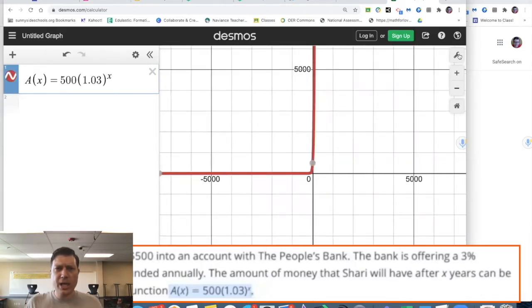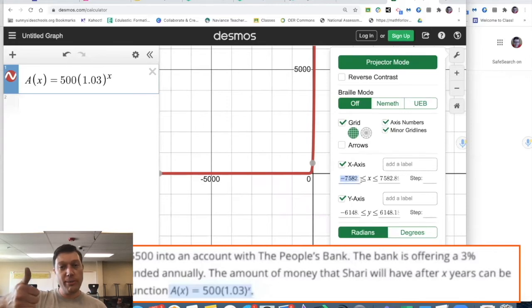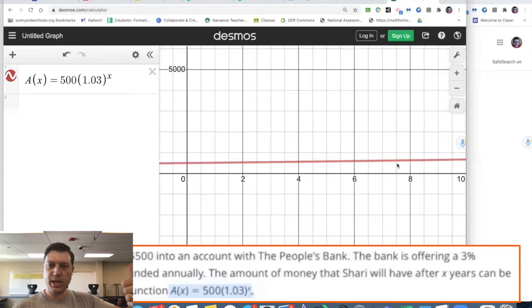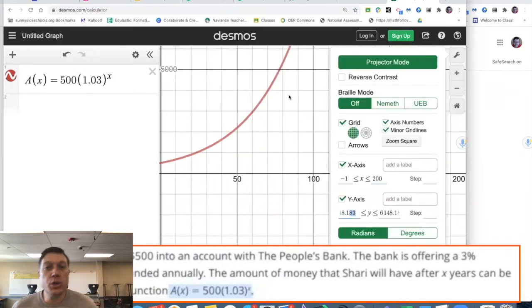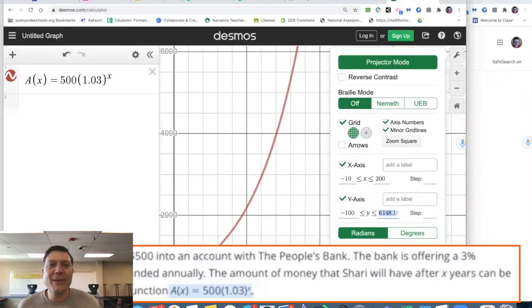But the key thing here is that in a compound interest formula, you have your initial amount, 500. You have your growth rate, like a percentage, like 3%. Why is the one there? I'll tell you about that, but not now. So you write all that in, you get that graphed, and then we want to mess with the wrench.